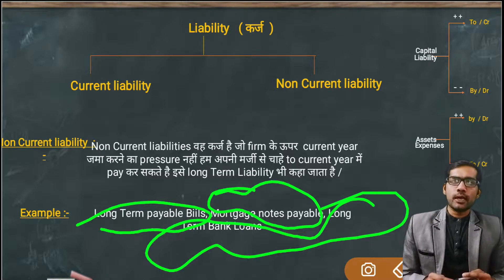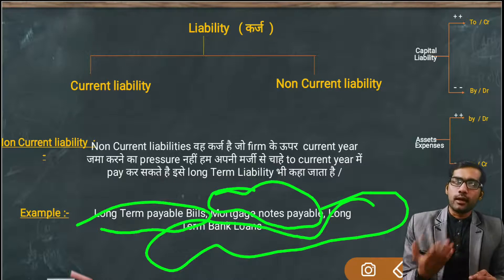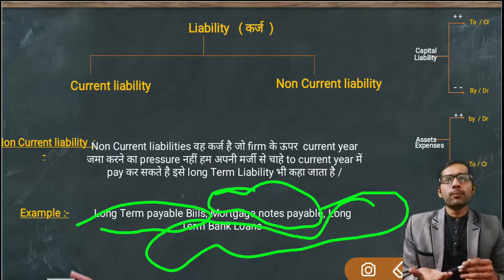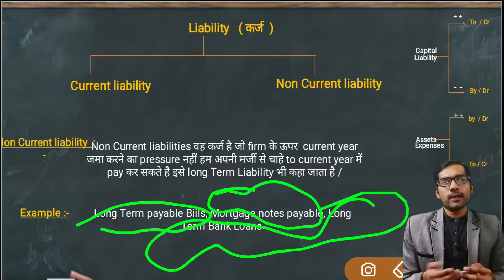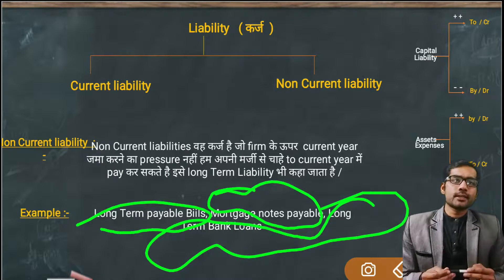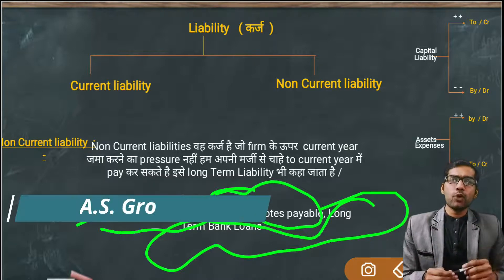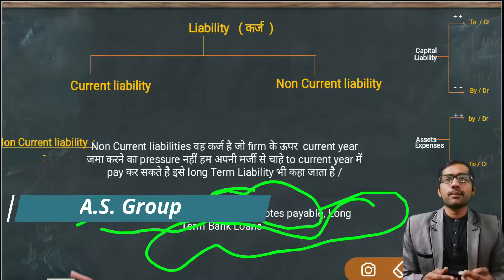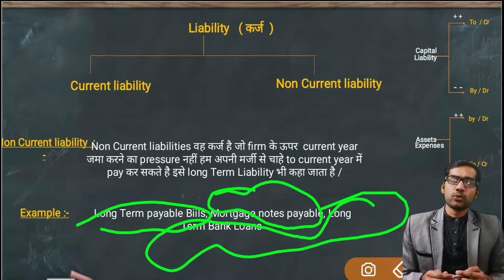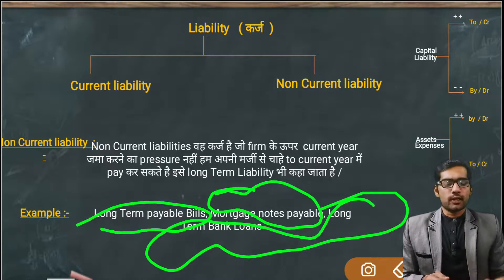So to summarize: liabilities that your firm has to pay in the current year are called Current Liabilities. And debts for which there is no pressure to pay in the current year — whether you pay in the current year or after the current year is your choice — all such liabilities are called Non-Current Liabilities.